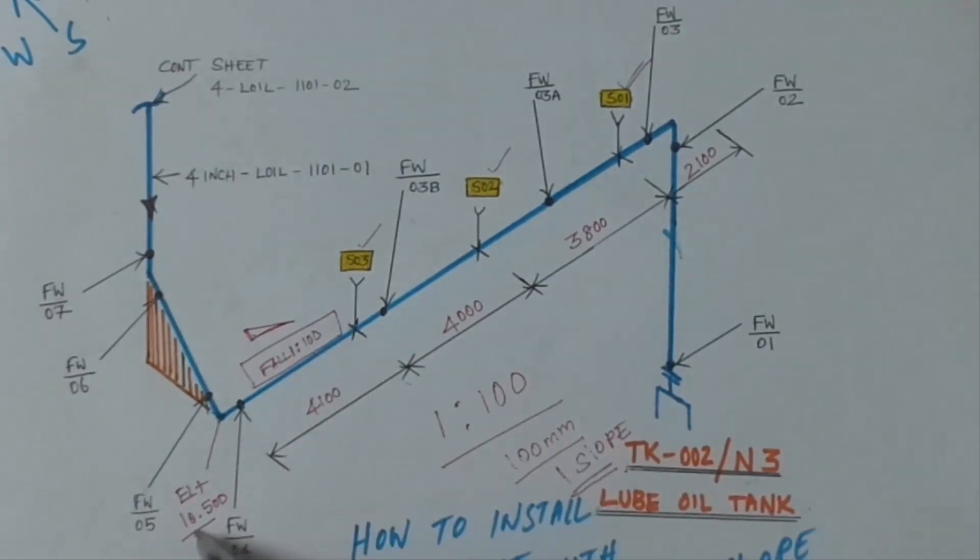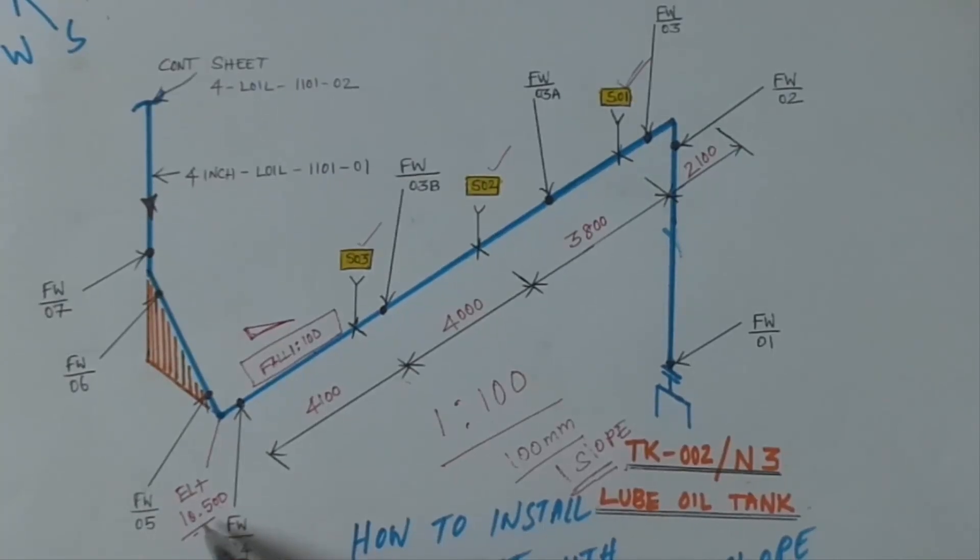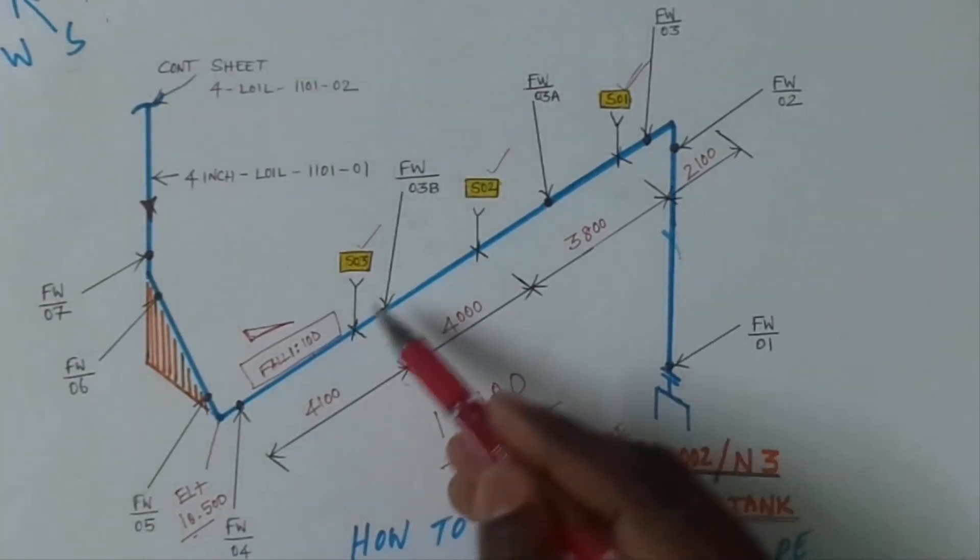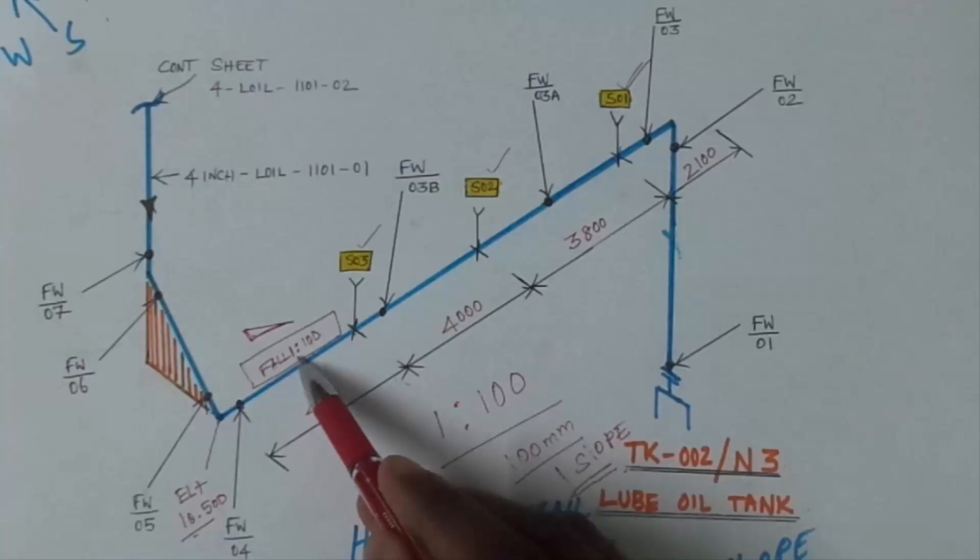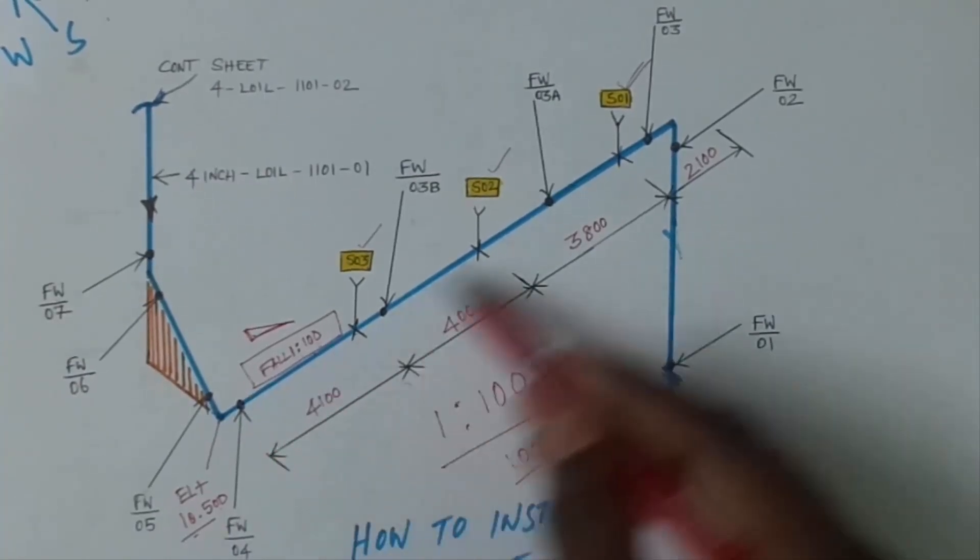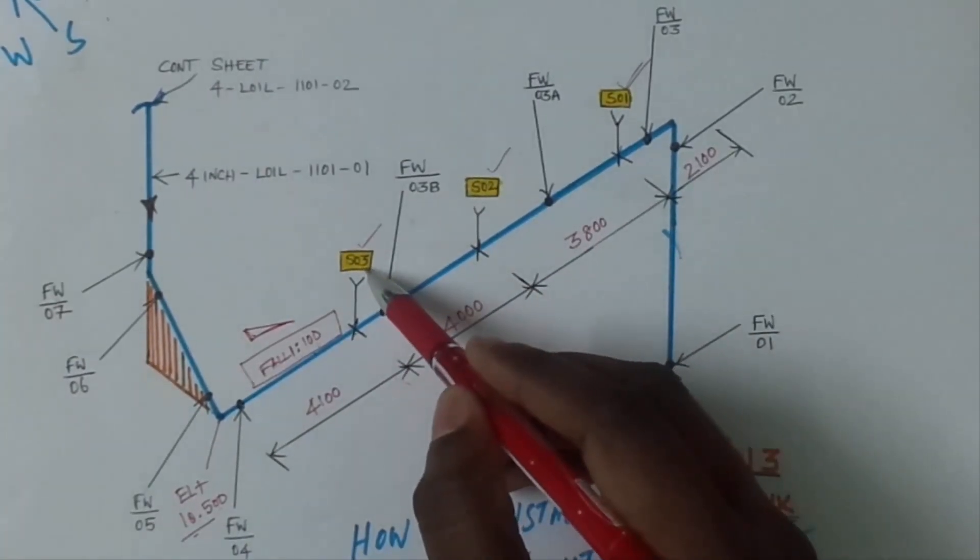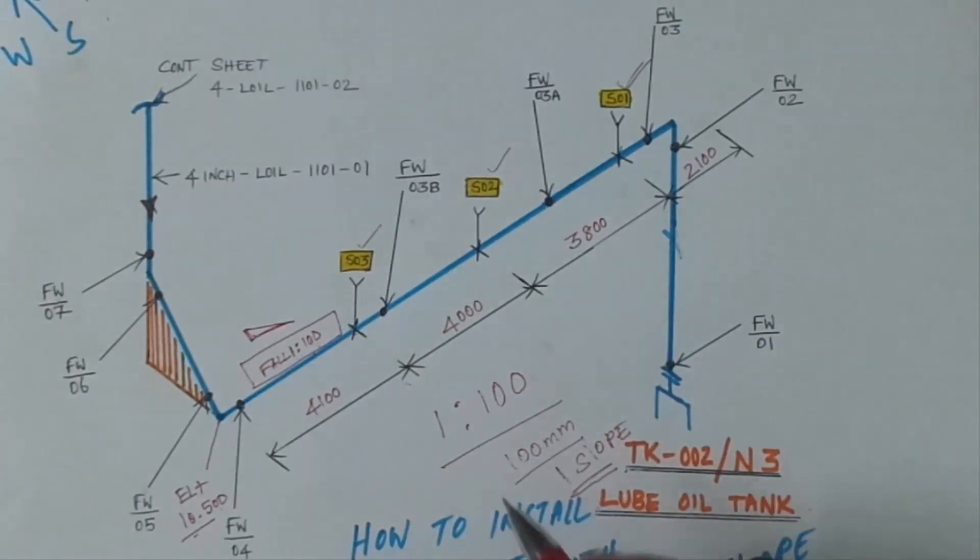So we need to calculate support number 3 elevation. How to calculate? Here 10 meter 500, then after that 4 meter 100 mm to the support. So 1 in 100.